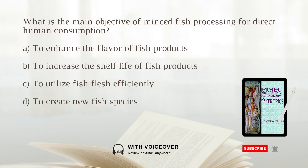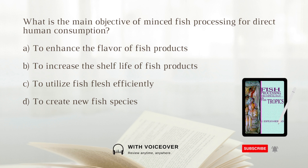What is the main objective of minced fish processing for direct human consumption? A. To enhance the flavor of fish products. B. To increase the shelf life of fish products. C. To utilize fish flesh efficiently. D. To create new fish species. Answer: C. To utilize fish flesh efficiently.